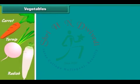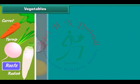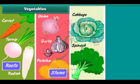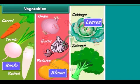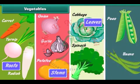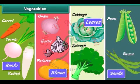Carrots, turnips and radish are roots. Potatoes, onions and garlic are stems. Spinach and cabbage are leaves. Peas and beans are seeds.